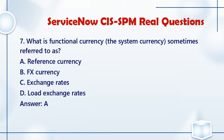Question 7: What is functional currency, the system currency, sometimes referred to as? a. Reference currency. b. FX currency. c. Exchange rates. d. Load exchange rates. Answer: A.